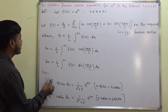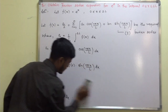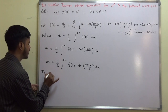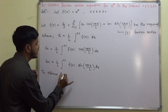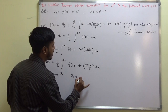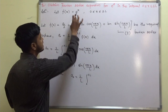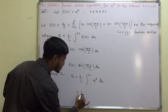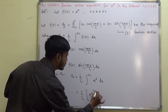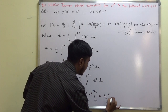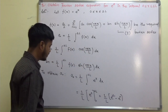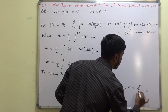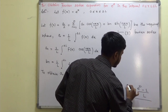To obtain a₀: a₀ = (1/L) · ∫₀²ᴸ f(x) dx = (1/L) · ∫₀²ᴸ e^x dx. The integration of e^x is e^x, so this gives (1/L) · [e^x]₀²ᴸ = (1/L)(e^(2L) − e⁰). Therefore, a₀ = (e^(2L) − 1)/L.